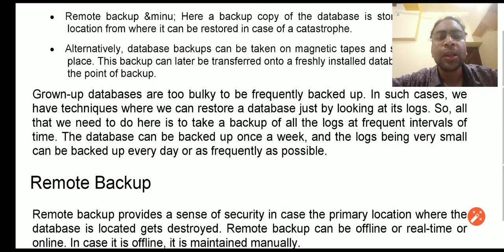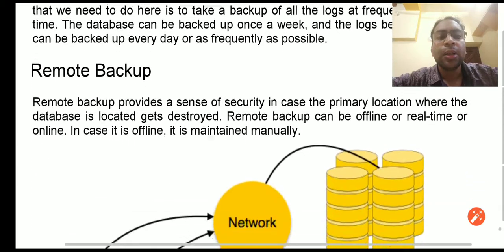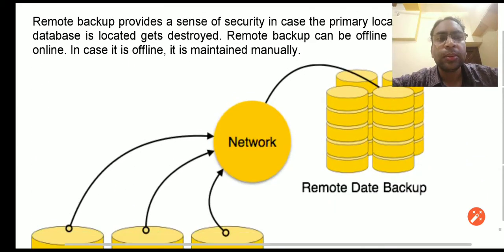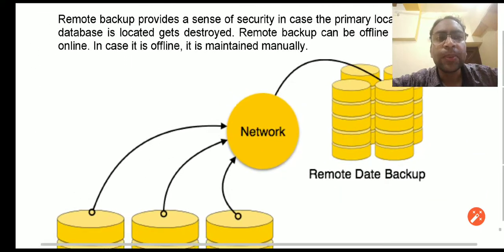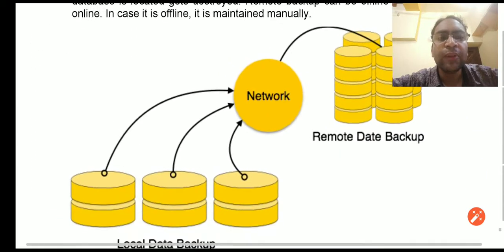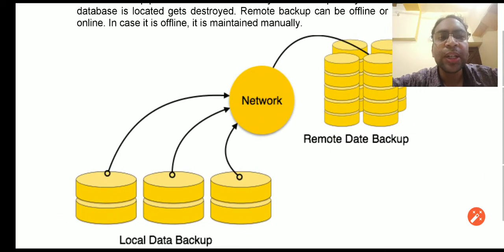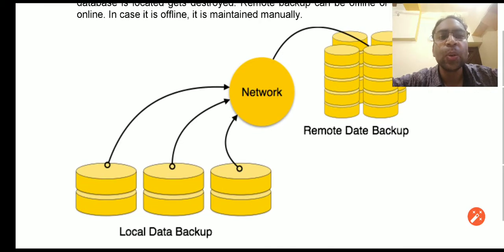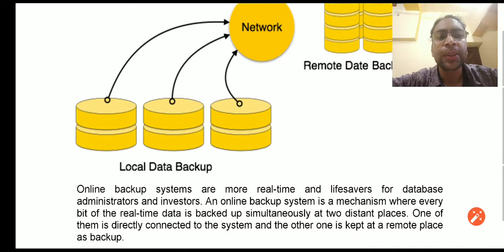For remote backups, you can have your local disk, and from that local disk the data can be transferred through the network and stored onto remote data disks. This is one of two options to back up the database and recover from catastrophic failures, the other being magnetic tape storage.